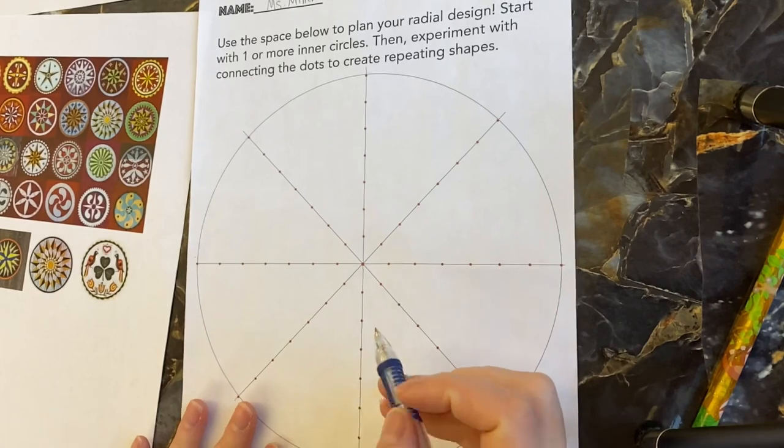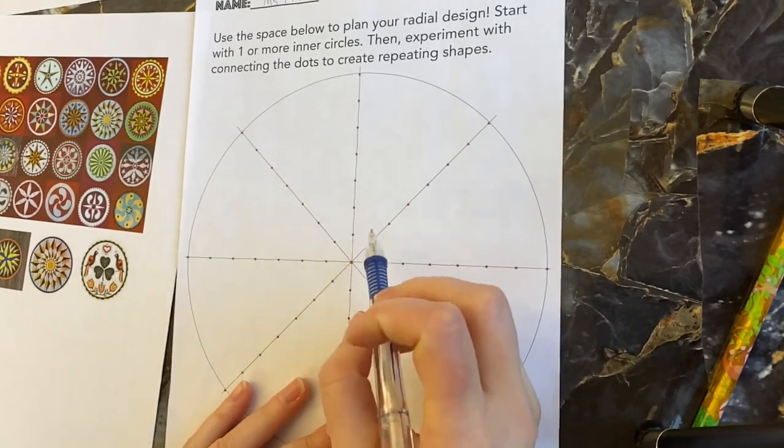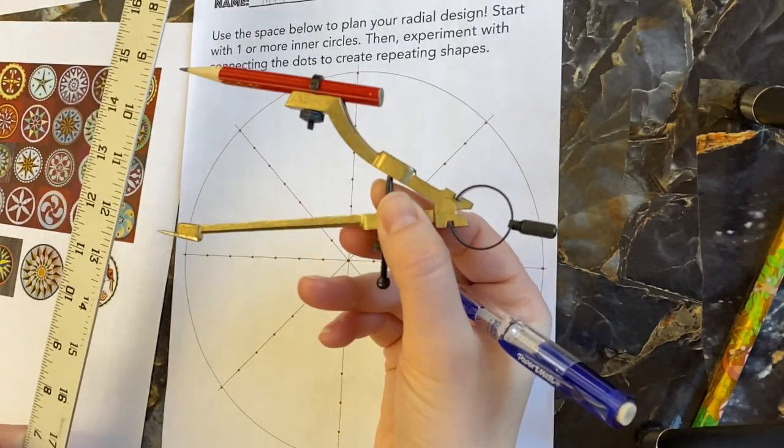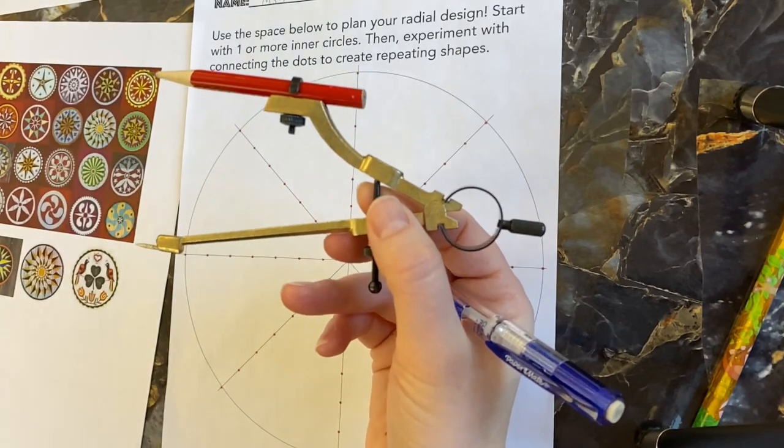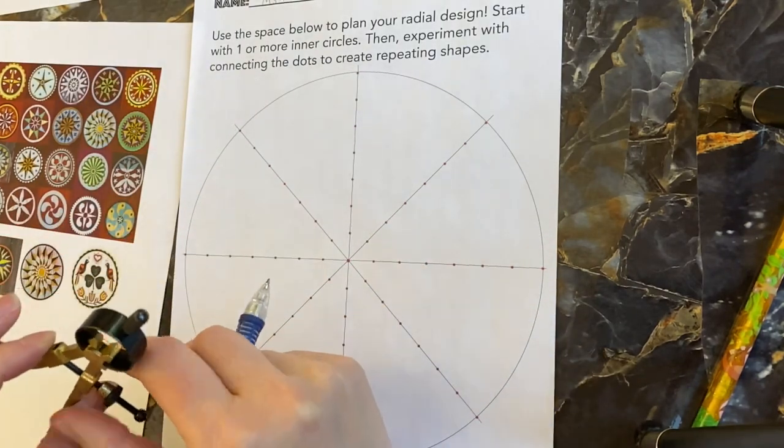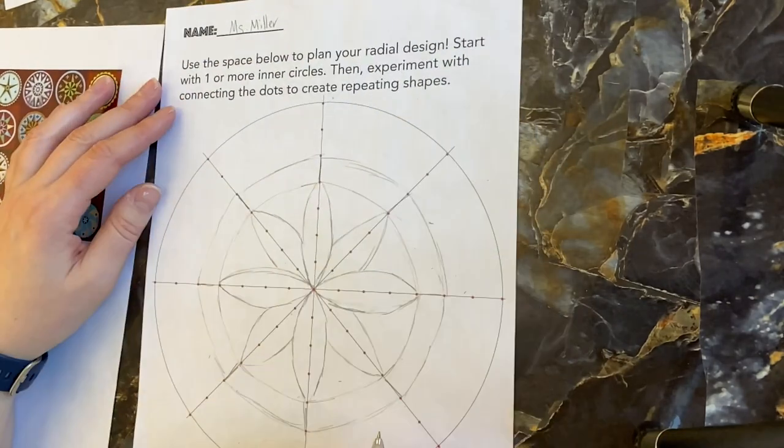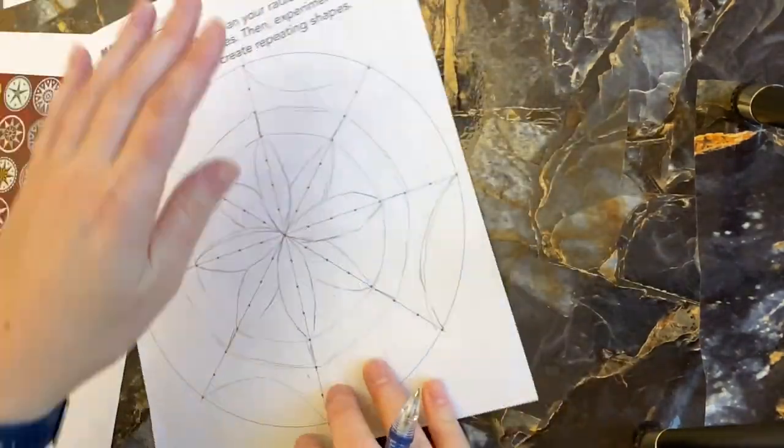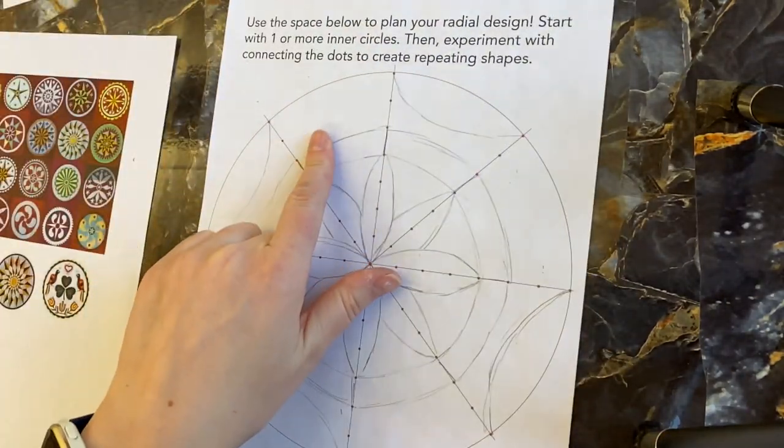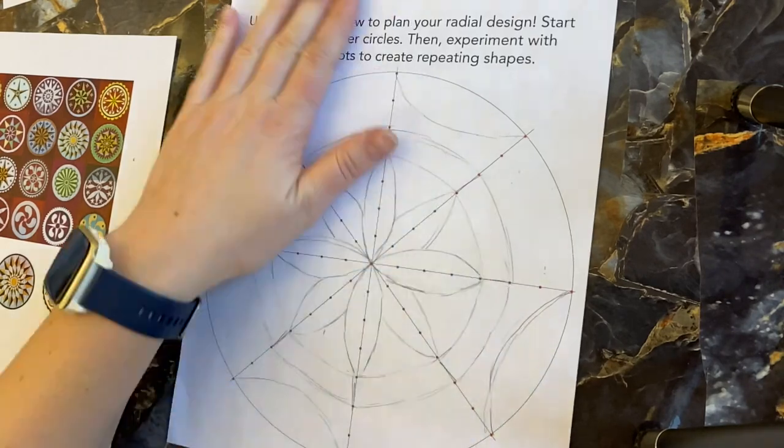I'm going to start sketching my design however I want. The ruler and compass will be used on the final, but for now I'm just going to freehand draw it because this is just my sketch. Okay, I have my design here. I might add something on my final—I haven't decided yet.